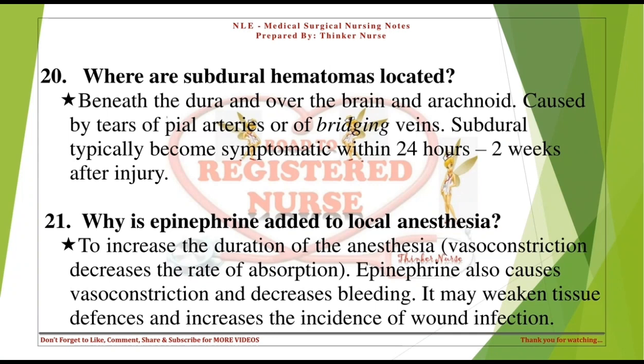Where are subdural hematomas located? Beneath the dura and over the brain and arachnoid. Caused by tears of pial arteries or of bridging veins. Subdural hematomas typically become symptomatic within 24 hours to 2 weeks after injury.